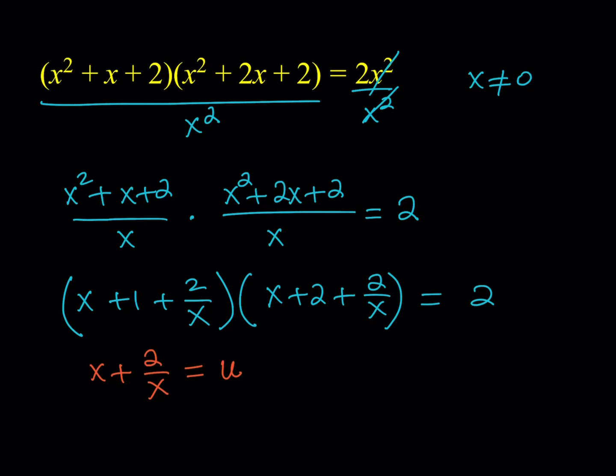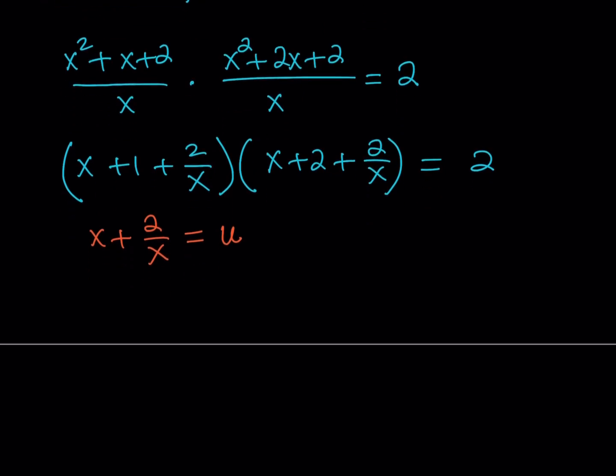That's why it worked. Because we have the same constant term here, even though we have different x's here and we have an x squared. So I guess we can generalize this as well. Maybe we can talk about that some other time. But let's go ahead and finish this up. So after calling the x plus 2 over x u, then we should be getting u plus 1 multiplied by u plus 2 is equal to 2.